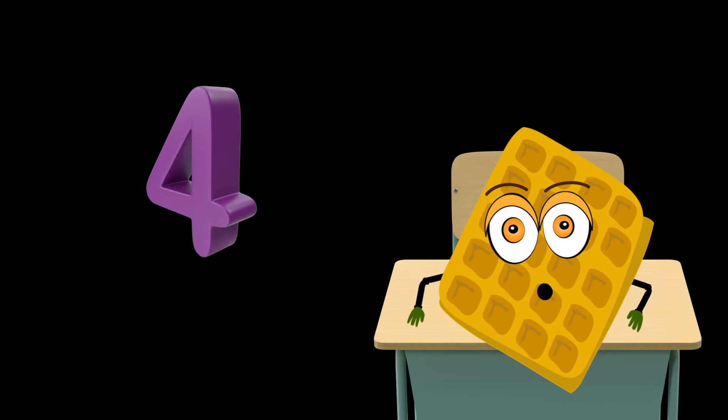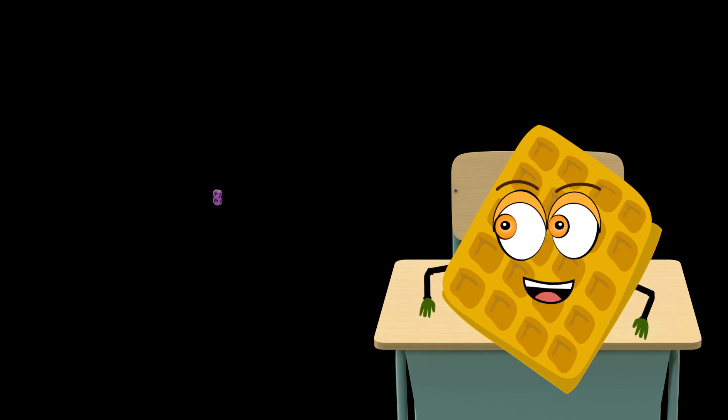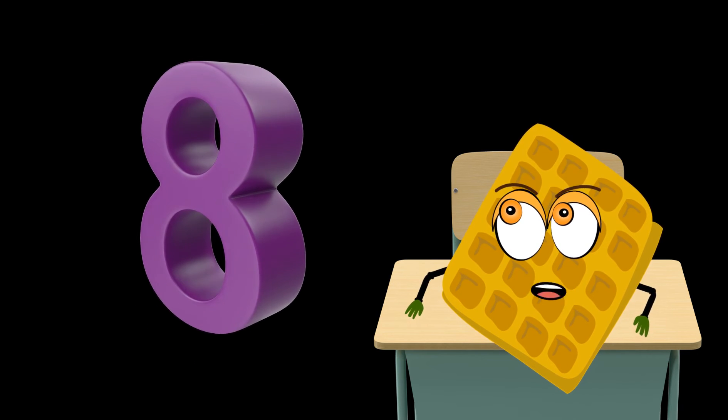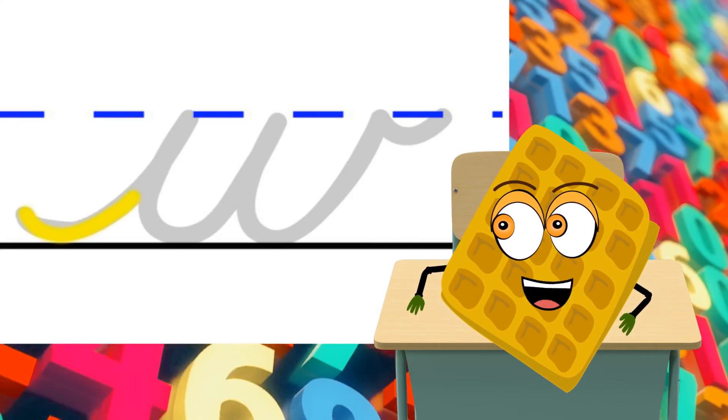We get to skip count by twos again. When I practiced my W's, I got really good at skip counting by twos. Now, I know all the multiplication facts. This is what the letter W looks like.